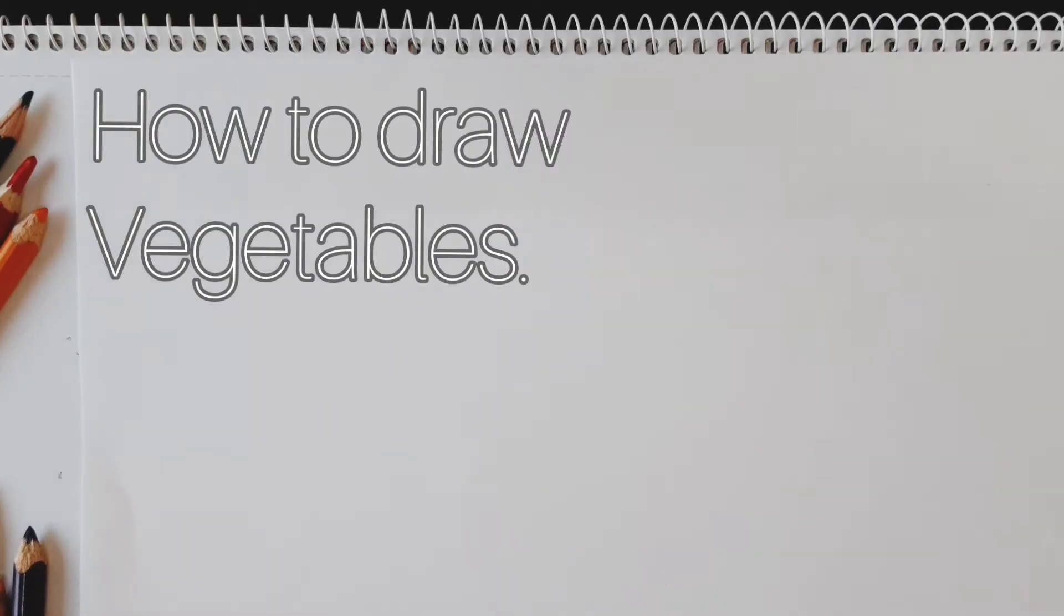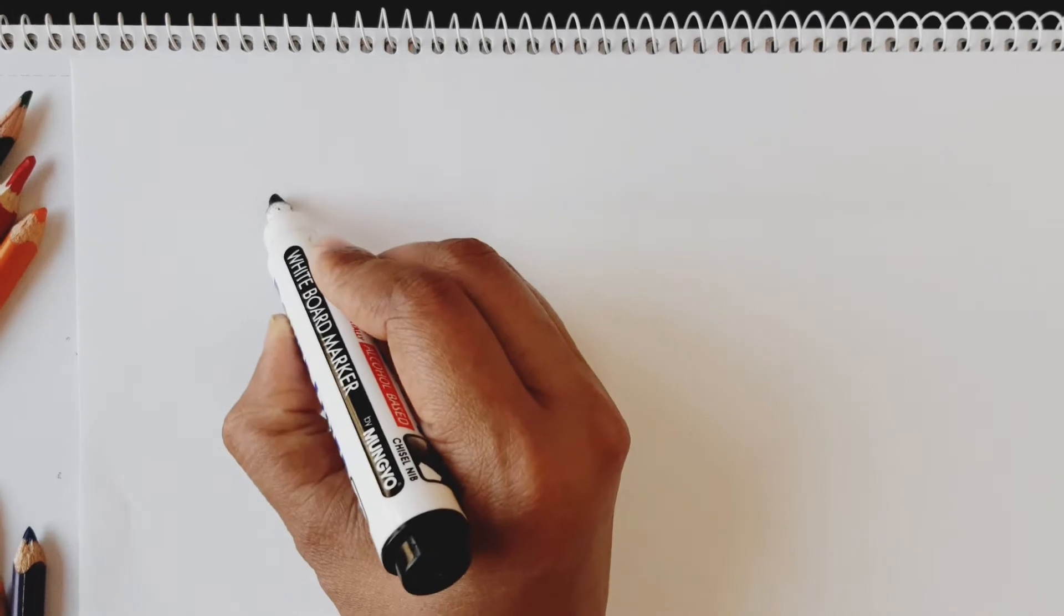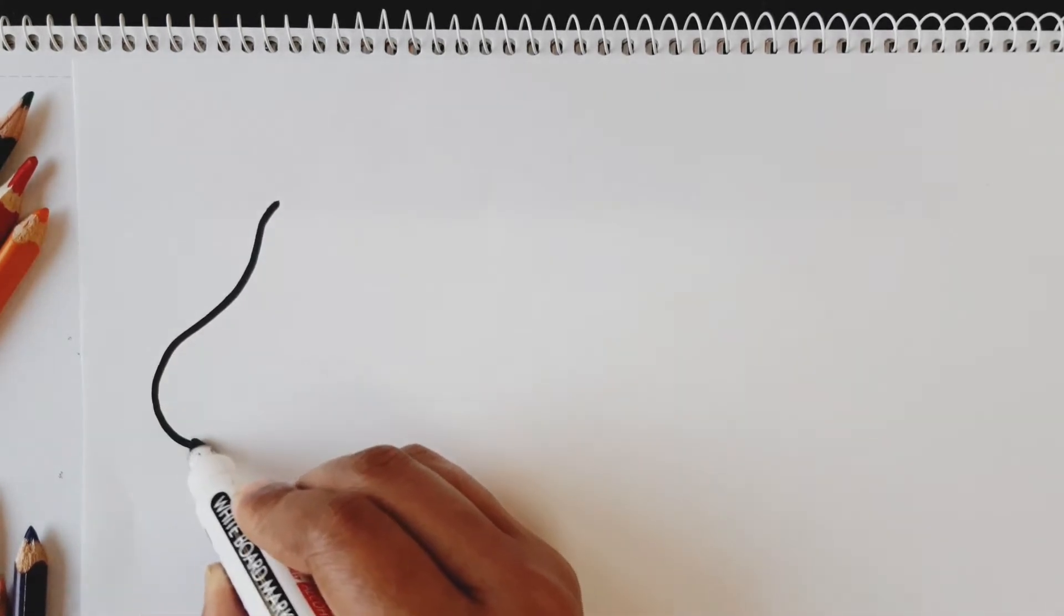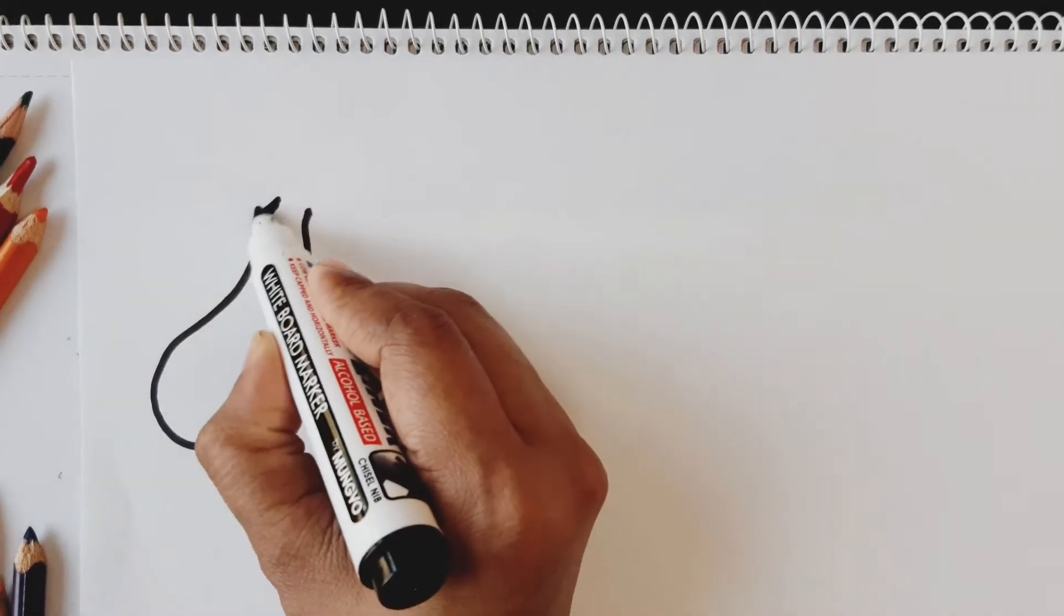Hello kids, welcome back to my channel. Today we are going to draw some vegetables, so let's start by making the king of vegetables, that is brinjal. It's also known as eggplant.